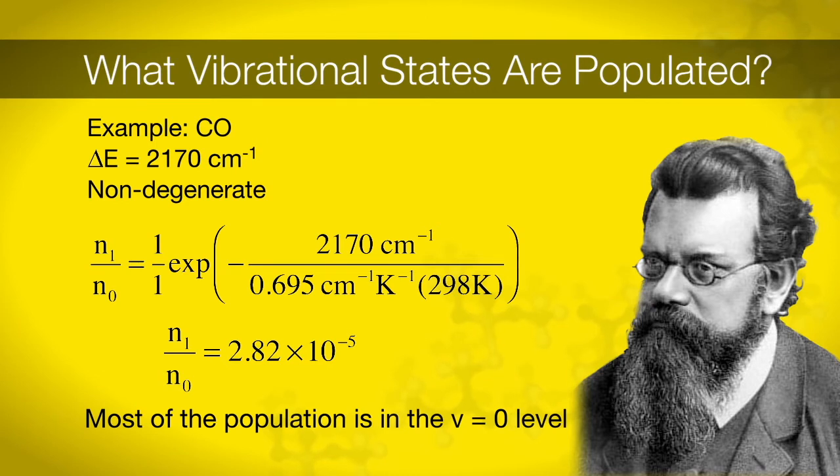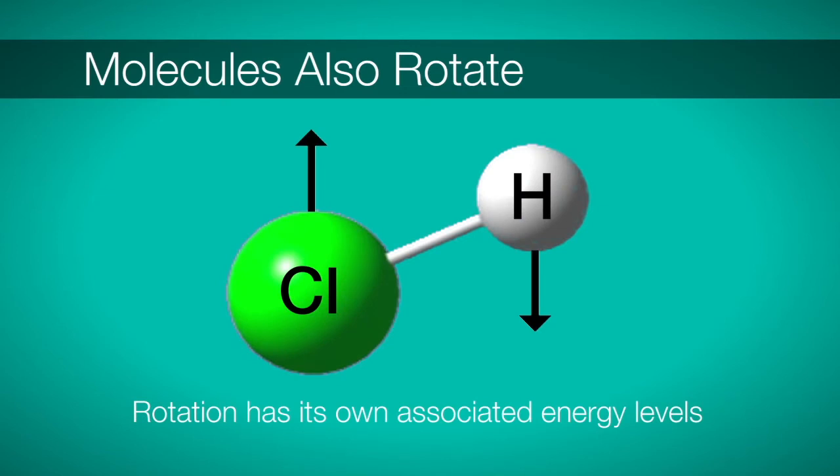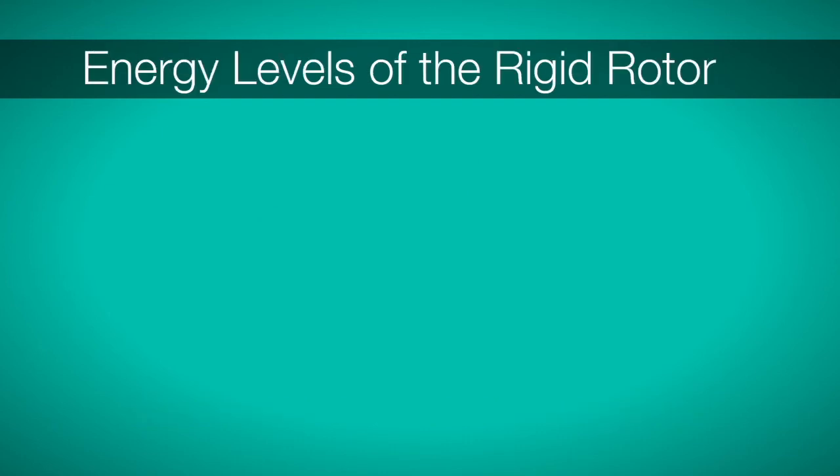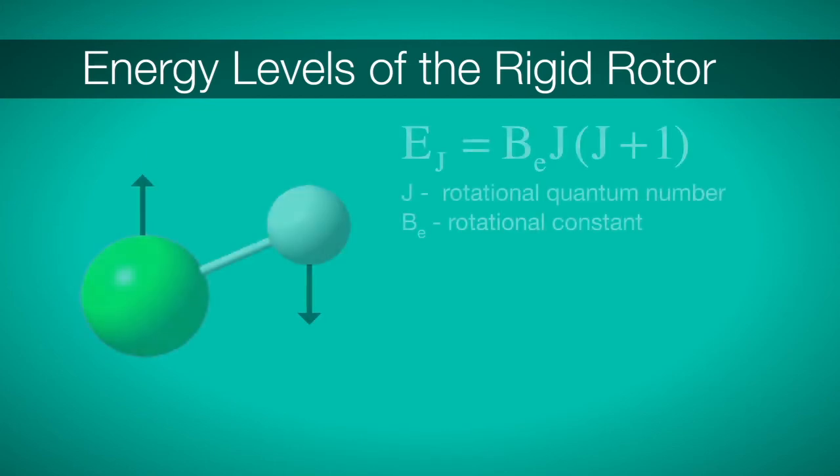For our experiment, we can assume that the vibrations absorb from the V equals zero state to the excited state. But vibration is only one motion we expect in molecules. Quantum mechanics also predicts quantization of the rotations of a molecule. We can calculate the rotational energy levels by solving the Schrödinger equation for the rigid rotor. By doing this, we find the energy levels of the rigid rotor are given by the simple expression E_J equals B_E J times the quantity J plus 1, where B_E is the rotational constant specific to a molecule and J is our rotational quantum number.